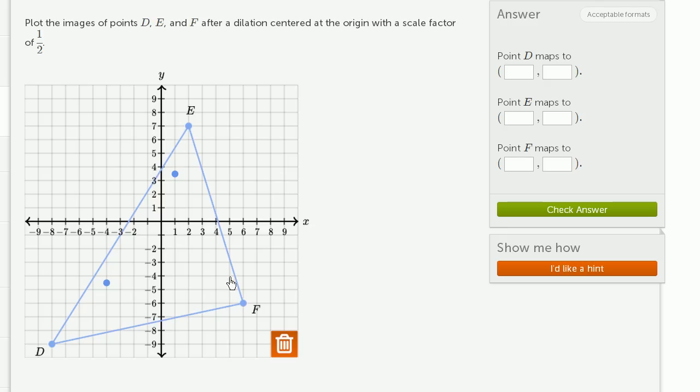And then finally, F. Its x coordinate is six more than the origin, and its y coordinate is six less. So its image after scaling is going to be three more in the x direction and three less in the y direction. So it's going to be right over there.